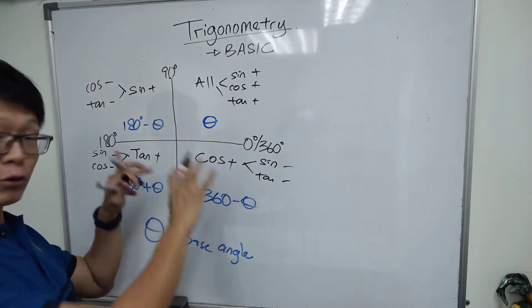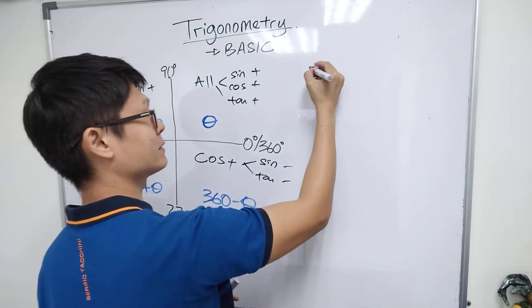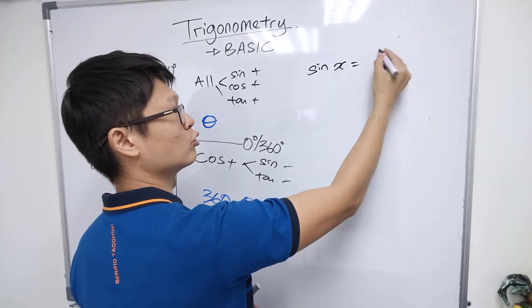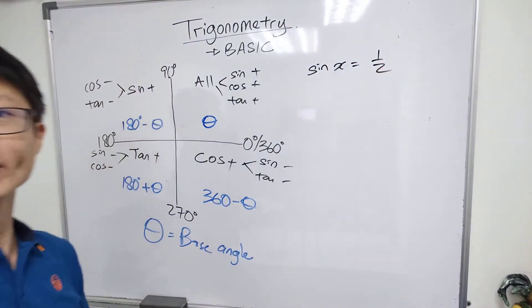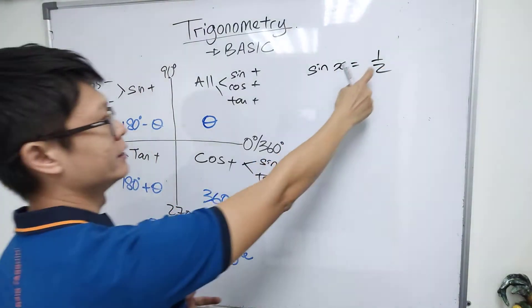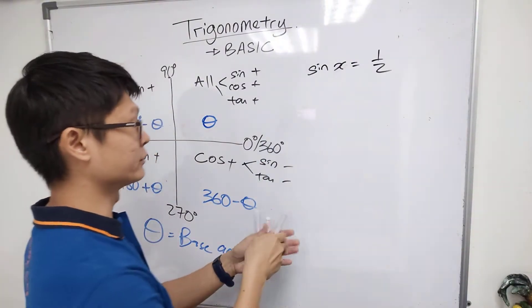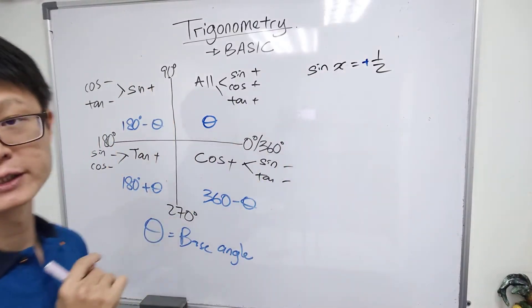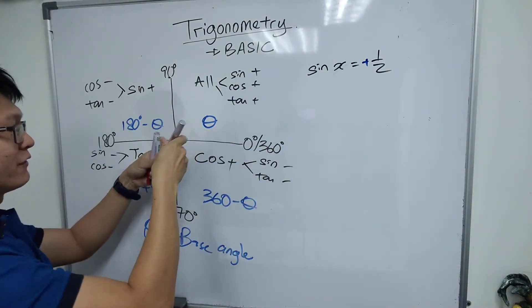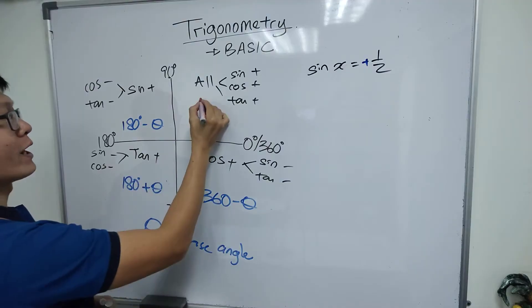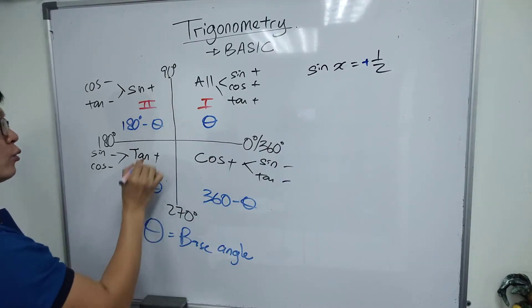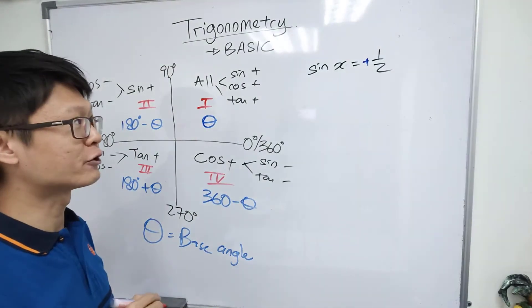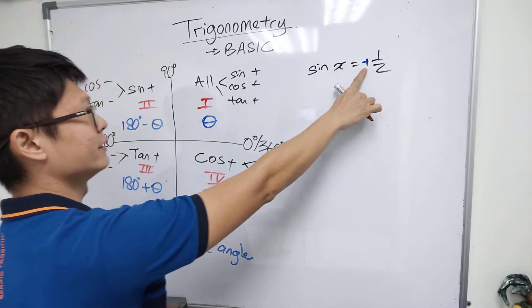If you get something like sine x equals one over two — that's a positive value. Since it's positive, we need to find where sine is positive. Sine positive is in quadrant one and quadrant two. So you identify the quadrant first.